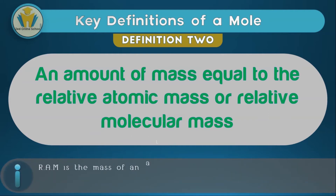You should understand that the relative atomic mass is the mass of an atom compared to the carbon-12 isotope. Therefore, if you're finding the number of moles of an atom, you use the relative atomic mass to see if that amount of mass you've gotten is one mole. In other videos, we'll talk more about this definition and how it's used in chemistry.